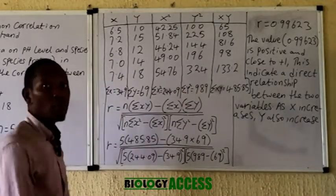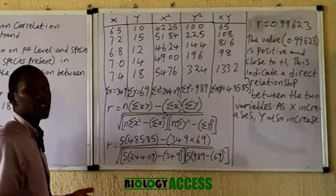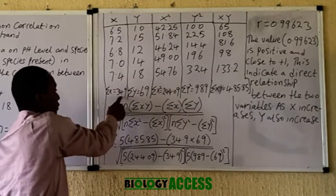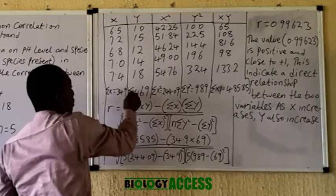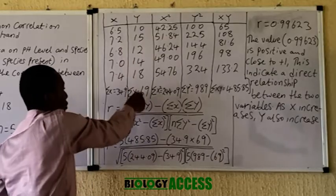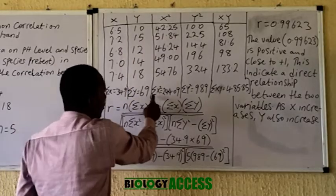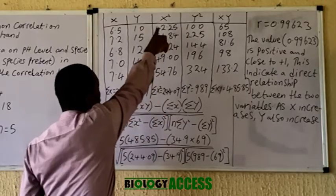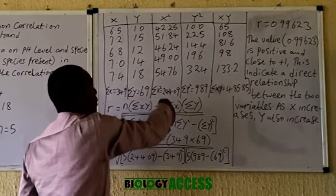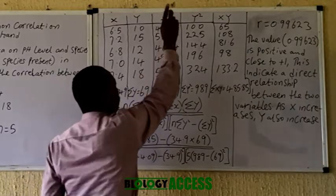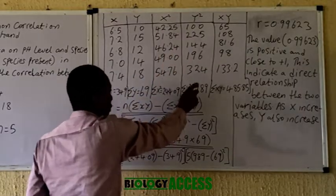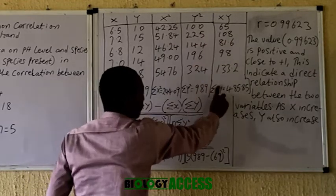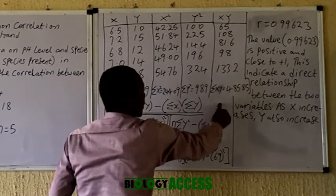After completing the table, find the sum of each column. The sum of x is 34.9, the sum of y is 69, the sum of x squared is obtained by summing that column, the sum of y squared is obtained similarly, and the sum of xy is found by summing all values in that column.